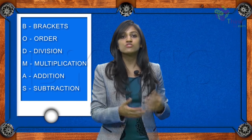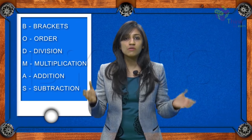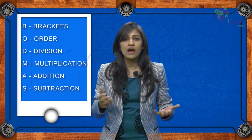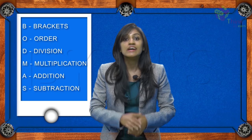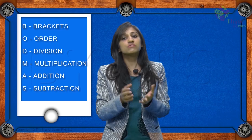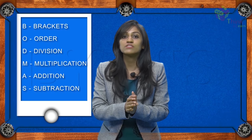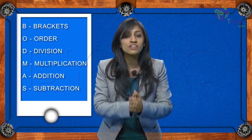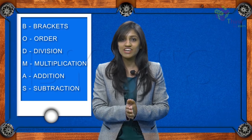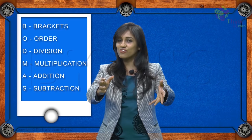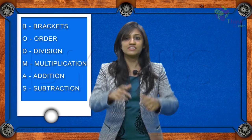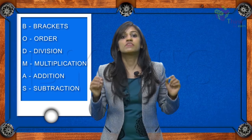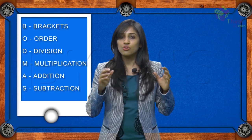Where B stands for brackets, O stands for order, about which you're going to learn in higher classes. D stands for division, M stands for multiplication, A stands for addition, and S stands for subtraction.